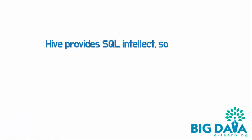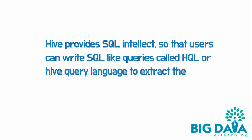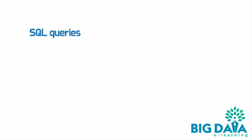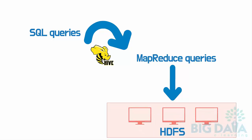Hive provides SQL intellect so that users can write SQL-like queries called HQL, or Hive Query Language, to extract the data from Hadoop. These SQL-like queries will be converted into MapReduce jobs by the Hive component, and that is how it talks to the Hadoop ecosystem and HDFS file system.